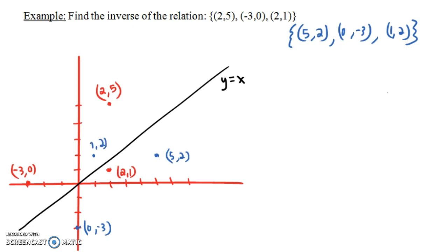So what do we notice about the relationship between the original relation and the inverse relation? Well, if we look at the line y equals x, which I've drawn in here, notice that (5,2) is the reflection of (2,5) across that line. And (2,1) and (1,2) are reflections of each other across this line. Same thing with (-3,0) and (0,-3). They're reflections across the line y equals x.